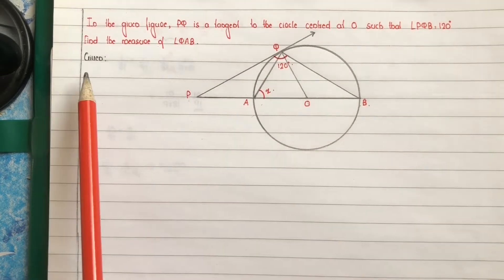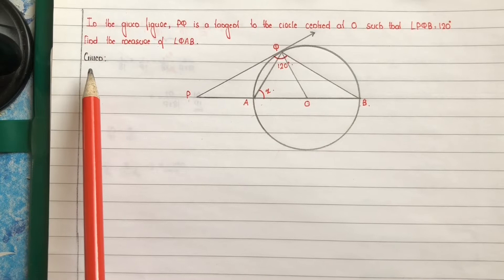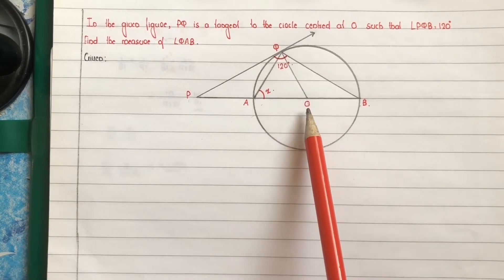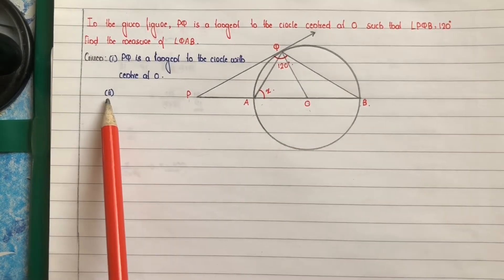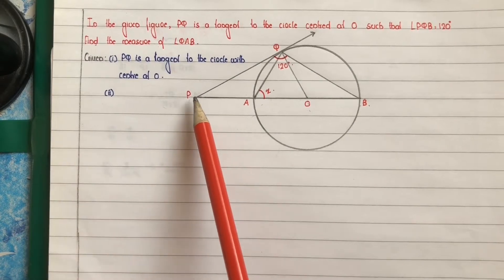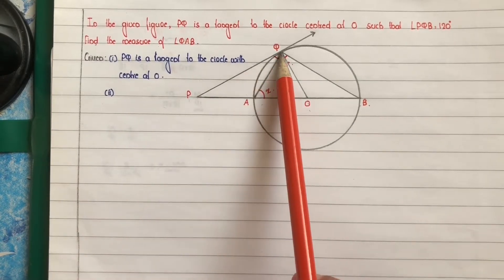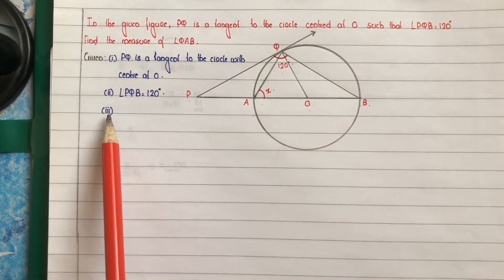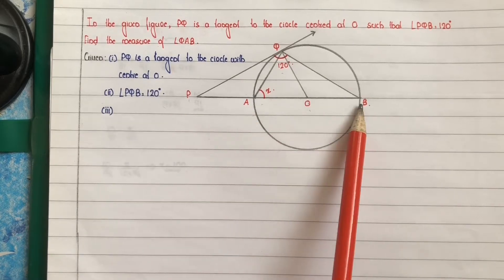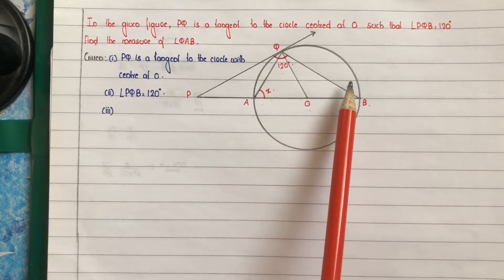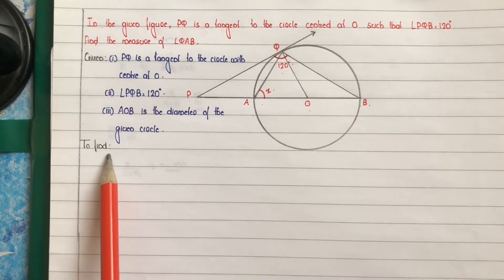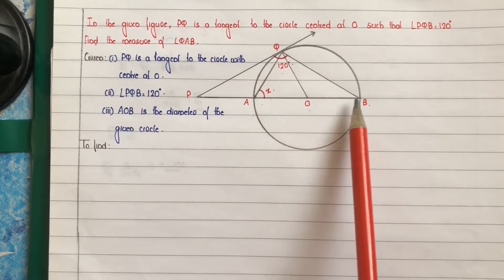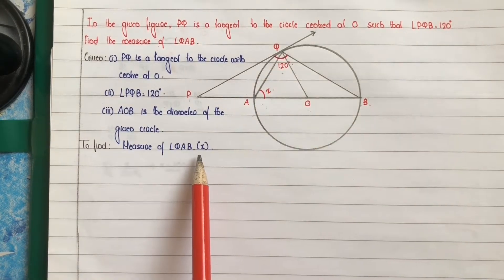We mark angle QAB as X. Given: first, PQ is a tangent to a circle with center O; second, angle PQB is equal to 120 degrees; third, AOB is the diameter of the given circle. To find: the measure of angle QAB, that is X.